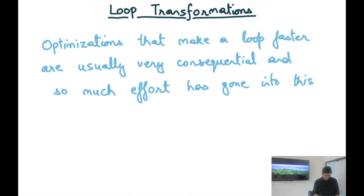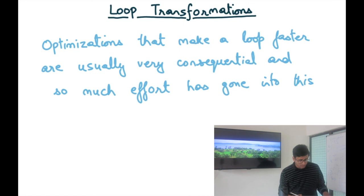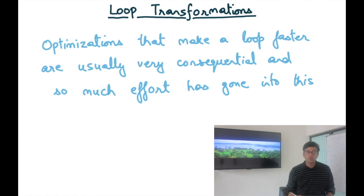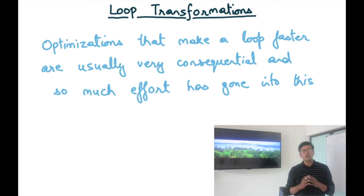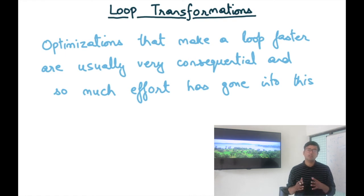To summarize: optimizations that make a loop faster are usually very consequential, and much effort has gone into this. We are going to study some of these efforts to understand the state of the art in loop optimization.